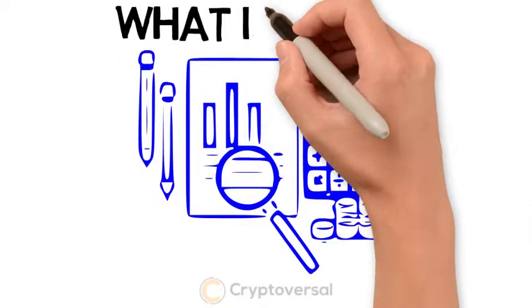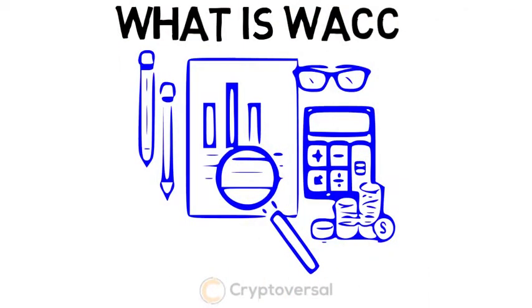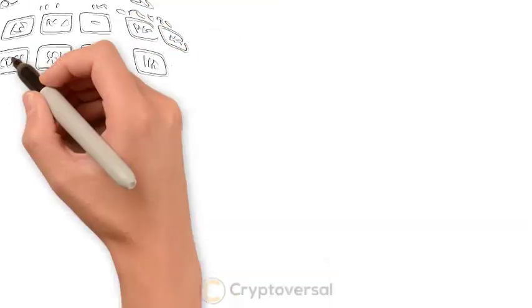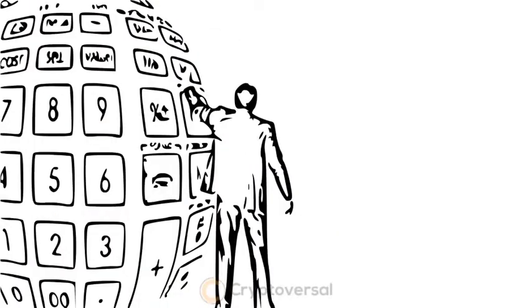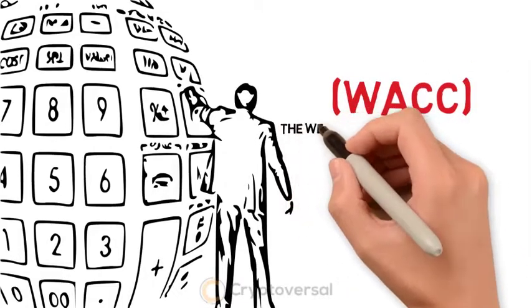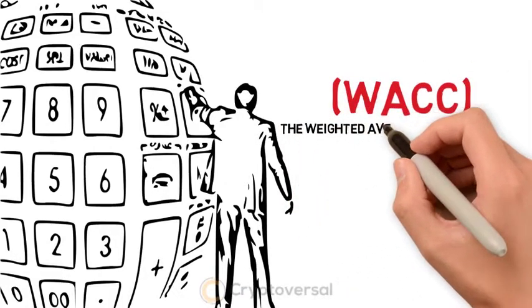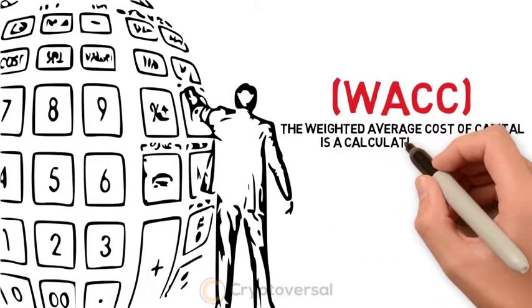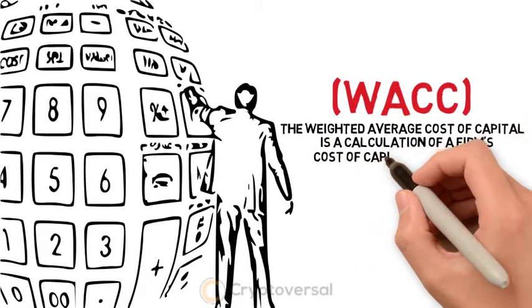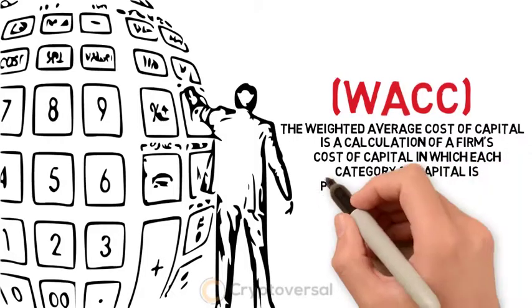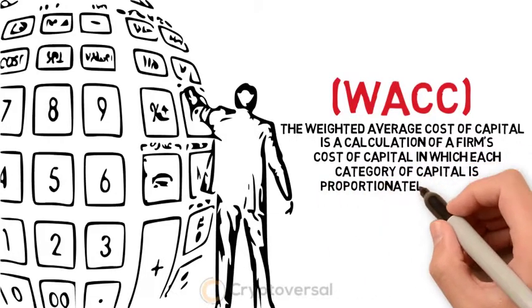What is WACC? The Weighted Average Cost of Capital is a calculation of a firm's cost of capital in which each category of capital is proportionately weighed.